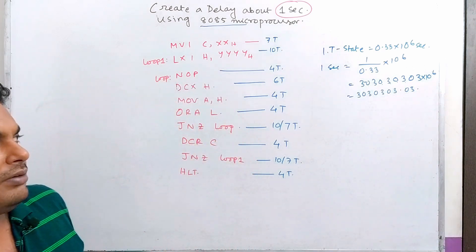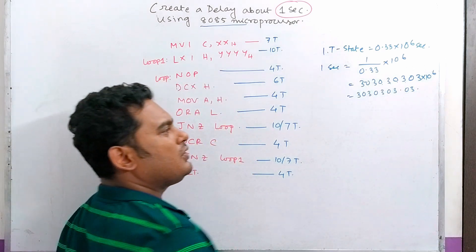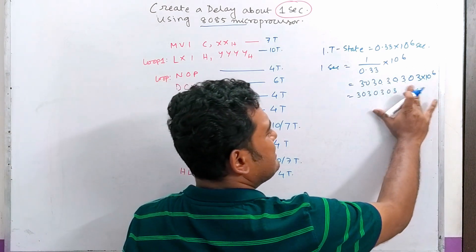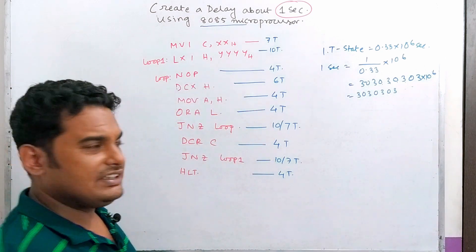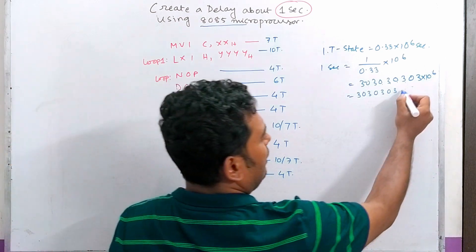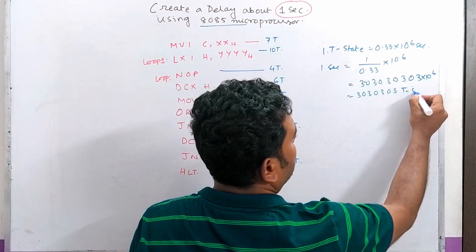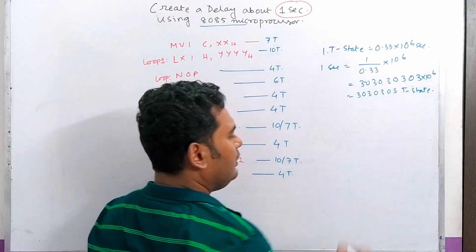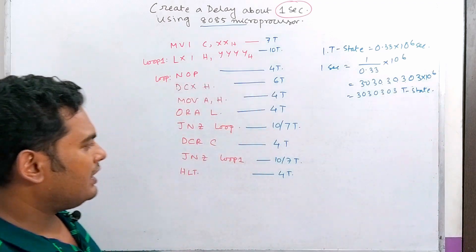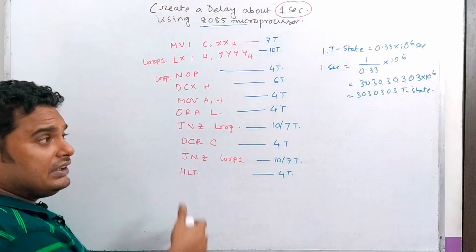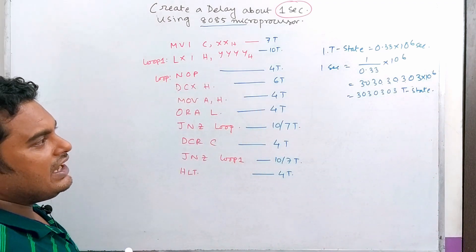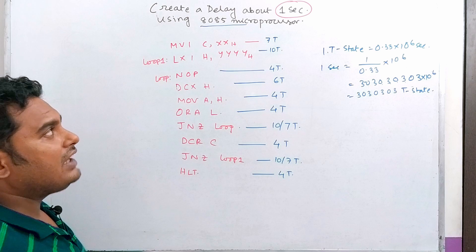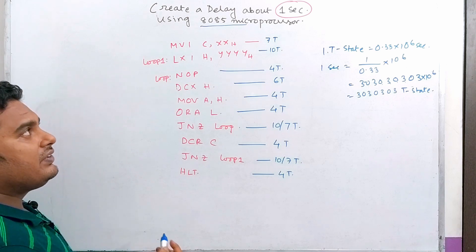There are two parameters in our equation and we consider this number of states. This forms our loop equation. The loop executes a certain number of states based on the values of X and Y loaded into the register pair.